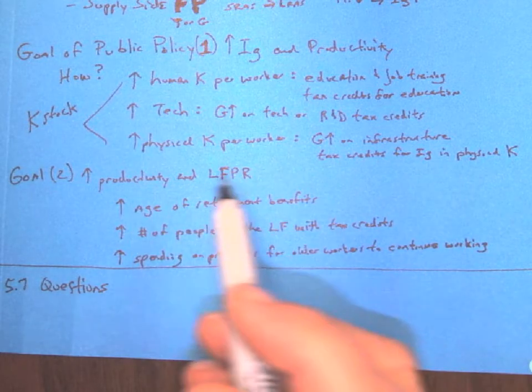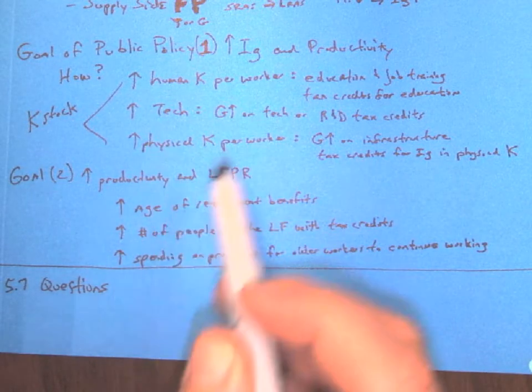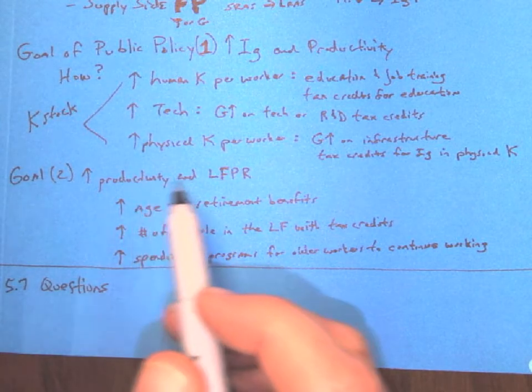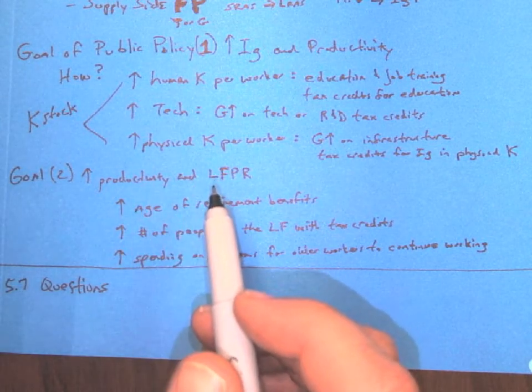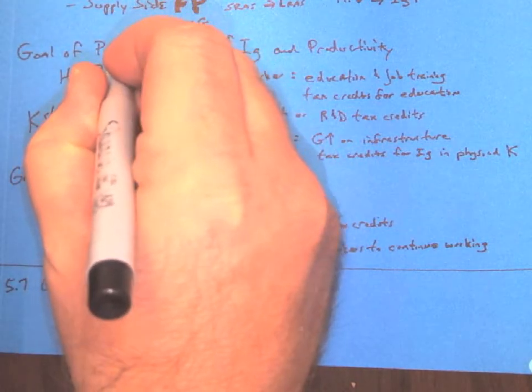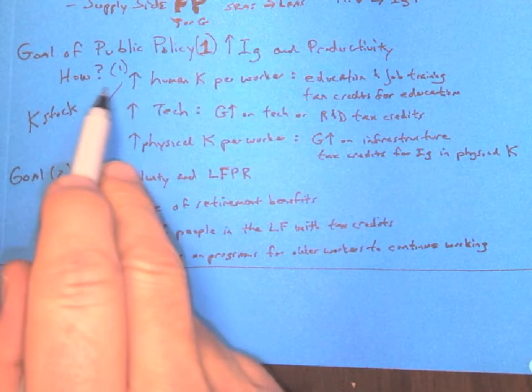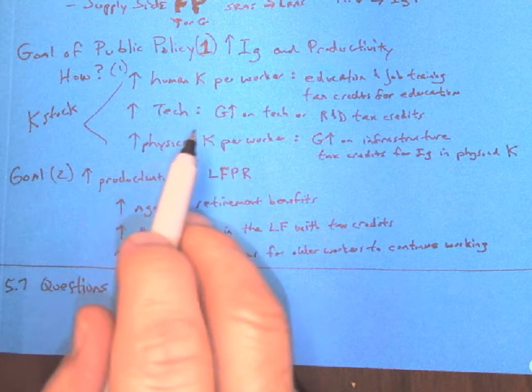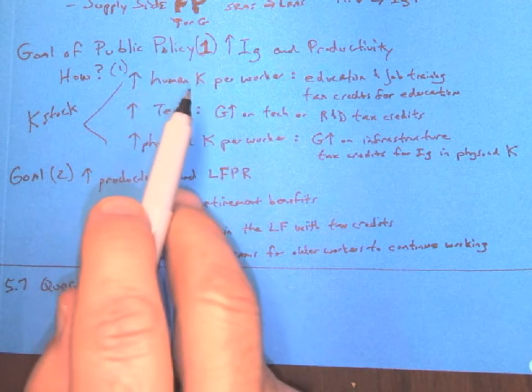So the goal with all that public policy, of course, is to raise productivity. And also, goal number two. This is goal number one. And goal number one is investing in our capital stock with public policy and supply-side fiscal policy.